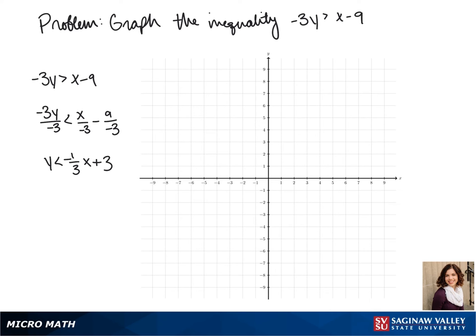When we go to graph our line, first we plot our points at 3, then we use our slope to find more points. We have to use a dashed line to connect our points because that line does not make our inequality true and isn't part of our solution.